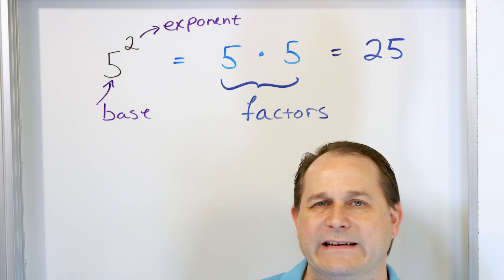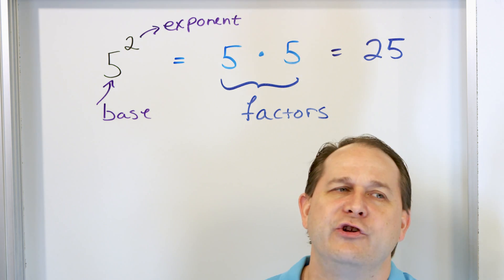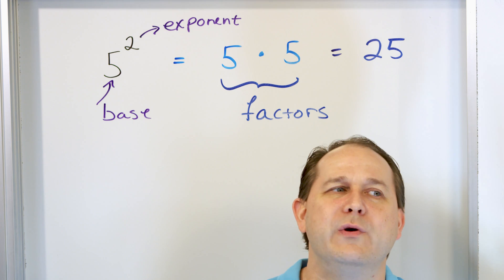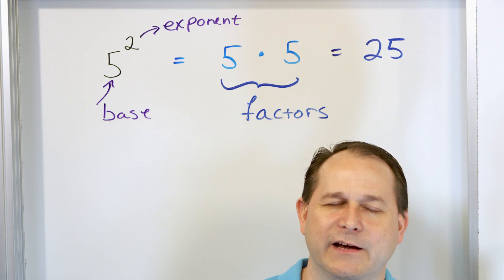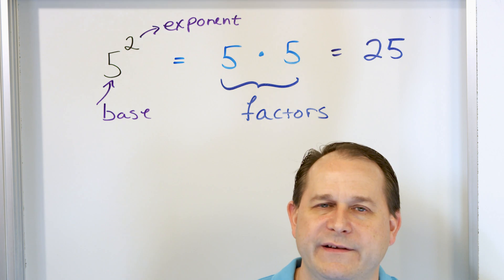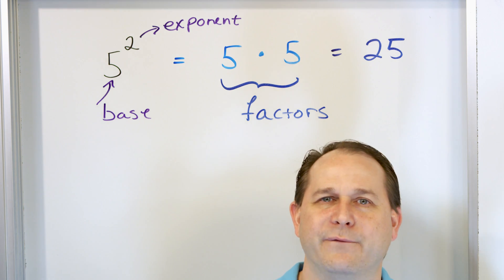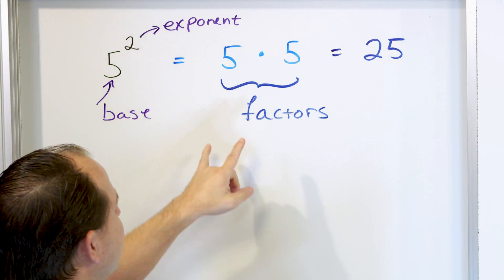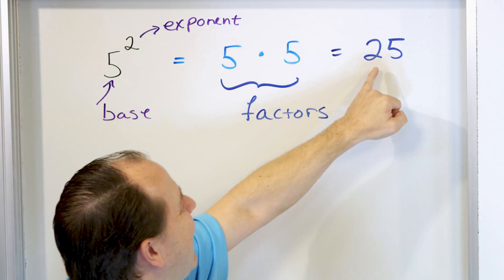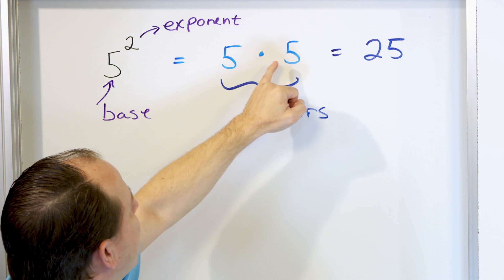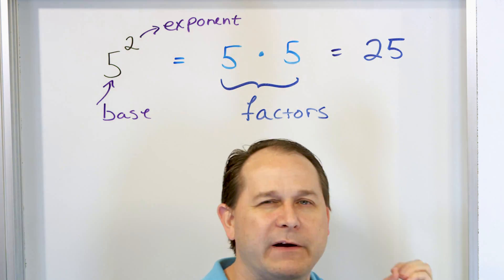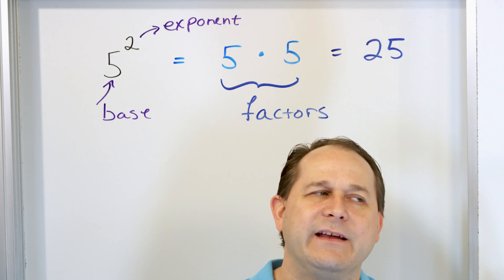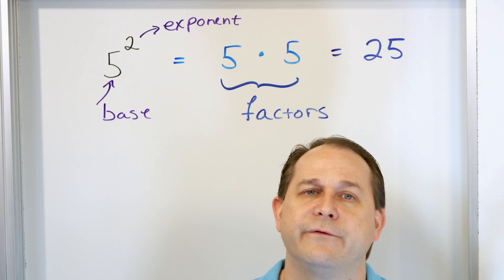For instance, six can be written as two times three — two and three are factors of six. Ten can be written as two times five — two and five are factors of ten. Sixteen: four times four is 16, so four is a factor of 16. Any number can be written as factors that multiply together. In these problems we're going to write the exponent out as a product of factors, because very soon we're going to use this idea of factors to do more complicated things, especially when we get into algebra with variables.